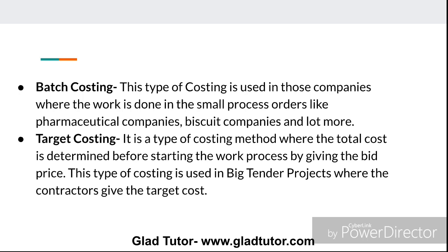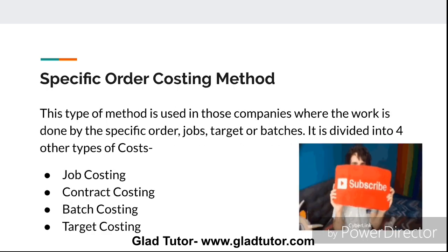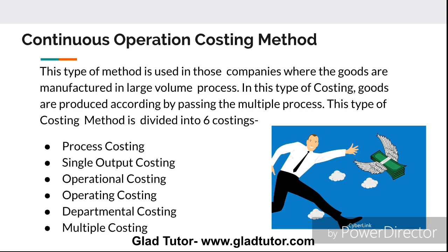This type of costing method is used in those situations where the cost must be pre-determined. Now we will talk about the continuous operation costing method. This type of costing method is used in those companies where goods are manufactured in large volume. In this type of costing, goods are produced by passing through multiple processes.